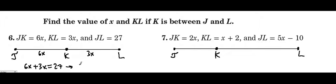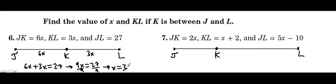So 9x is equal to 27. Dividing by 9, x is equal to 3.